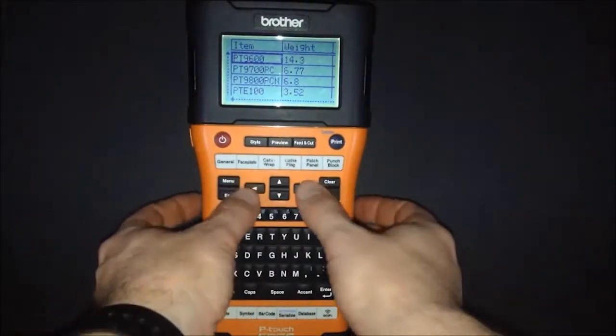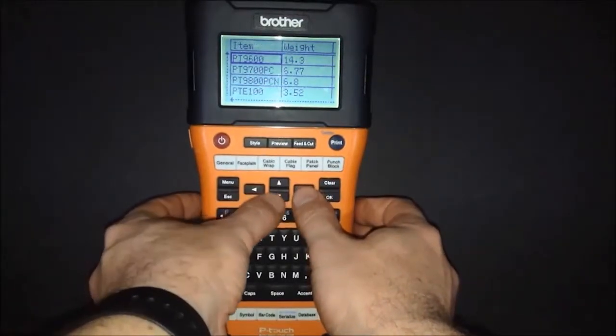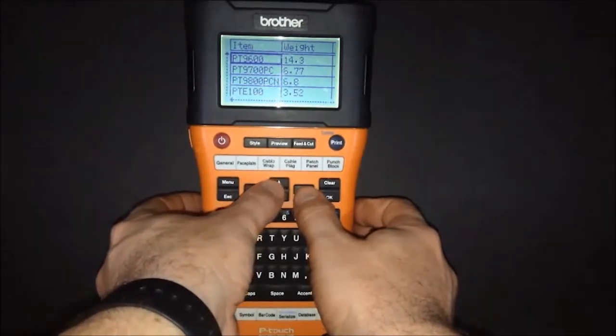Using the right or left arrow keys, we can scroll through that information, up and down, to find the one that we want to use.